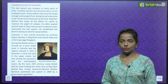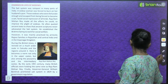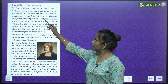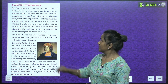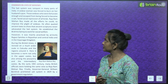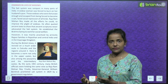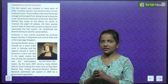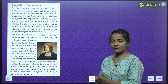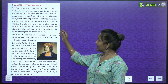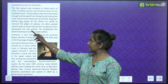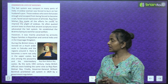Changes in the lives of widows: the sati system was rampant in many parts of India — a widow was forced to burn on her husband's funeral pyre. Those widows who were fortunate enough to escape being forced to become a sati faced social repressions of all kinds. Raja Ram Mohan Roy made all the efforts he could to improve the plight of widows. He often quoted ancient texts to show that ancient scriptures never advocated the sati system.